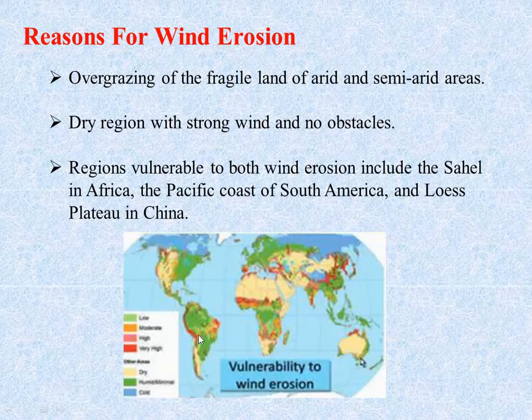You can see the worldwide map of areas vulnerable to wind erosion with different color coding for low, moderate, high, and very high vulnerability.